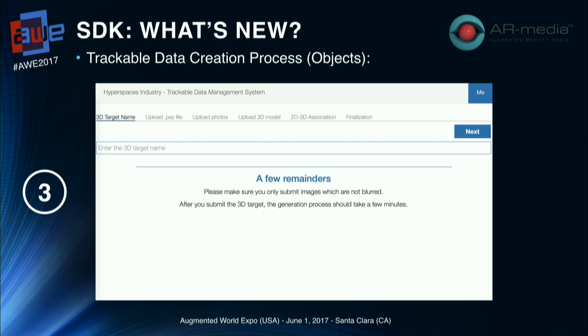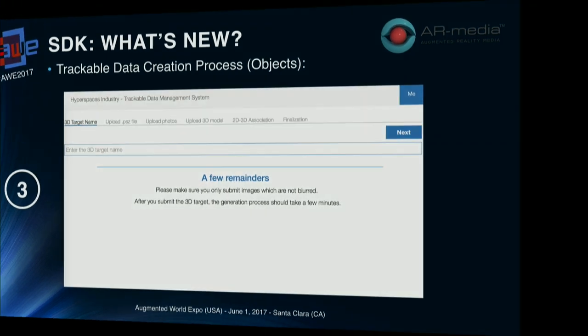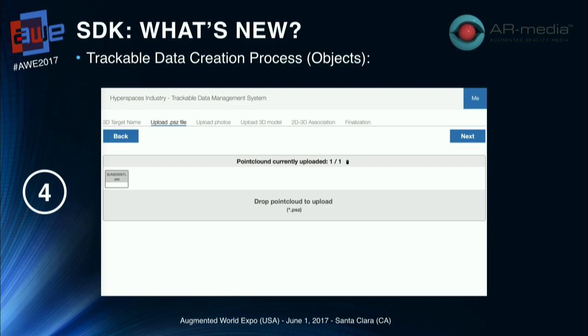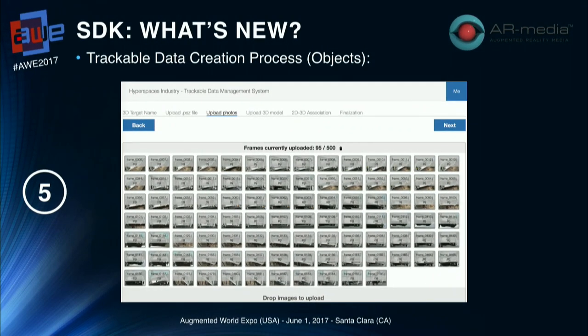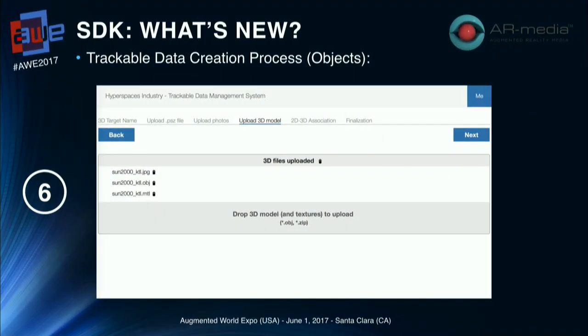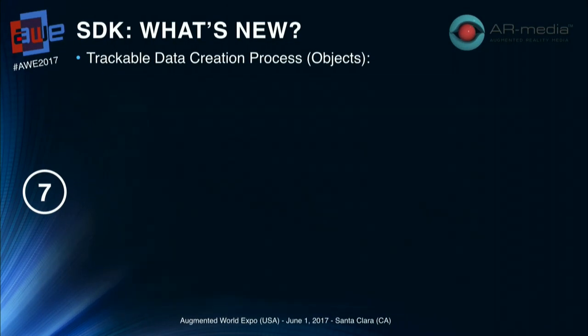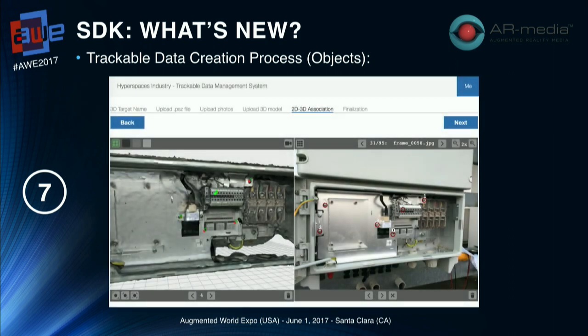Finally, you go to the developer portal and start the wizard to create the trackable data, where you provide a name for your tracking data, upload the point cloud created from the pictures, upload the pictures themselves, and the reference object — in this case an OBJ with texture. The last step requires you to pick two or three pictures and select four or six points on those pictures and the corresponding points on the 3D model, which helps you align the point cloud with the reference model so that augmentation appears at the proper scale and position with respect to the object.